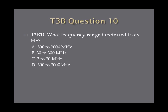Question 10. What frequency range is referred to as HF? A, 300 to 3,000 megahertz. B, 30 to 300 megahertz.